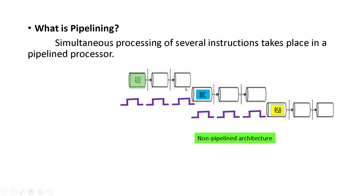Here we are not including the pipeline concept. For executing the add instruction, it takes three stages or three clock cycles. This example is taken for a simple data processing instruction. Similarly, another instruction, RSB which is reverse subtract, also has its opcode fetched, decoded, and then executed, with the result written back into the register file — taking three clock cycles.